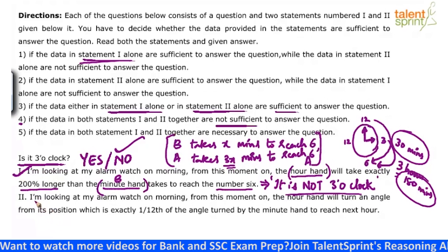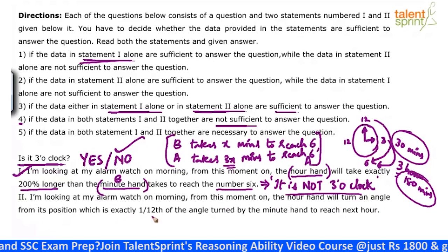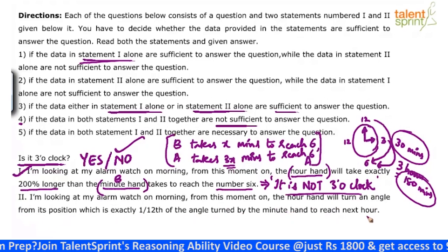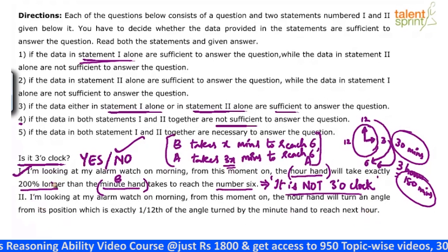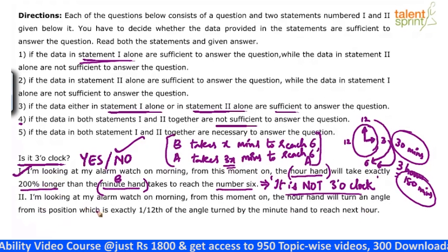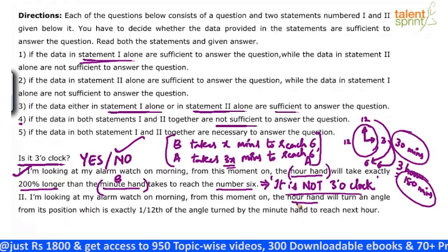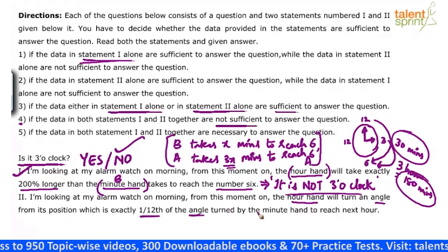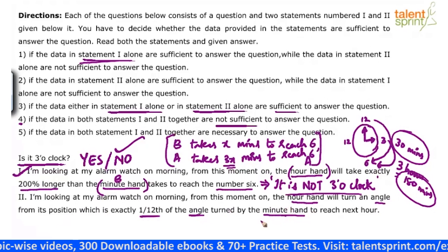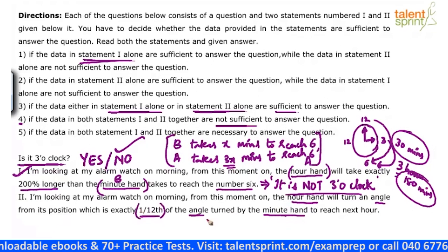Look at the second statement now. It says: I am looking at my alarm watch in the morning. From this moment on, the hour hand will turn an angle which is exactly 1/12 of the angle turned by the minute hand to reach the next hour. Similar to the previous statement which was about time, the second statement is with respect to angle. If the minute hand turns by x degrees, the hour hand will turn by x/12 degrees — it will be 1/12 of the angle turned by the minute hand.